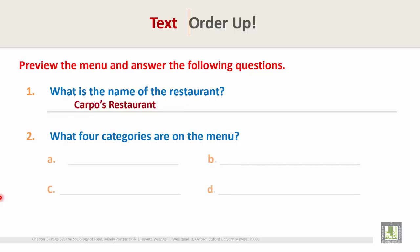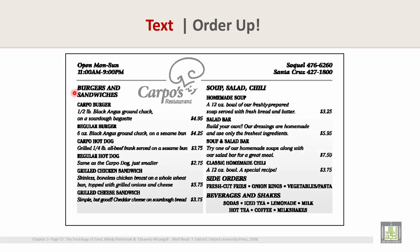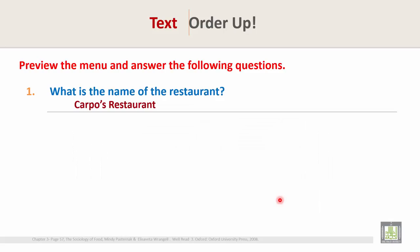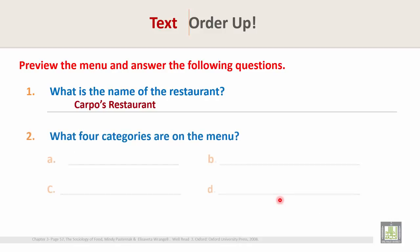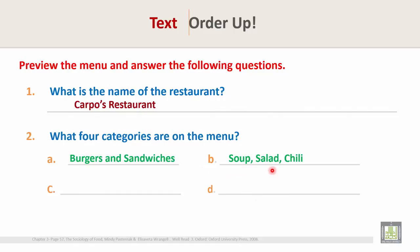Question 2: What four categories are on the menu? Look at the menu and find out these four categories. The four categories are: Burgers and Sandwiches, Soup Salad and Chili, Side Orders, and Beverages and Shakes.